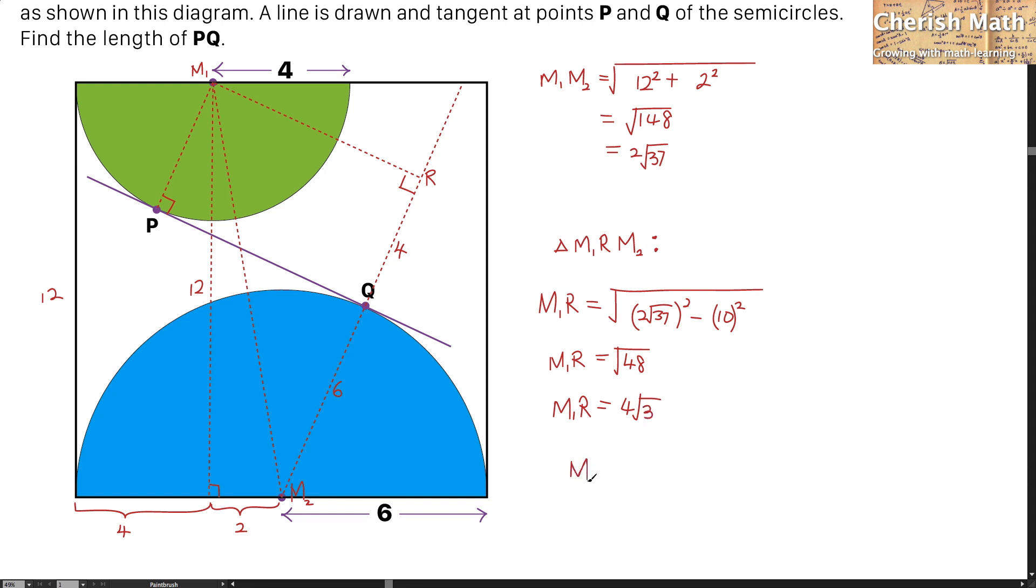Now, in our case here, M1R is equal to the line PQ. So the value of the PQ now is 4√3, and I solve the puzzle.